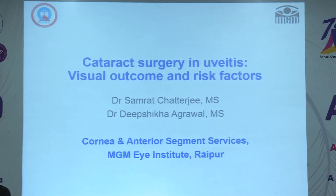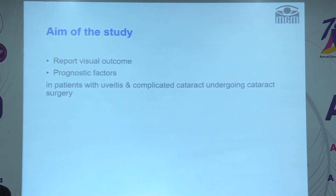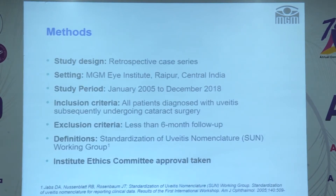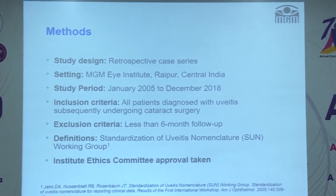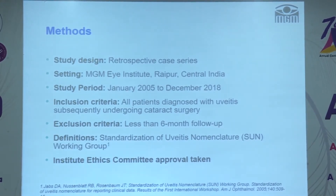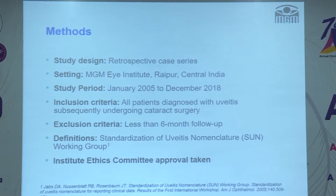The topic of my presentation is to report the visual outcome and risk factors for cataract surgery in uveitis — specifically the visual outcome and prognostic factors. This was a retrospective case series from January 2005 to 2018. We excluded patients with less than six months of follow-up, and we defined all uveitis terminology according to the SUN nomenclature.